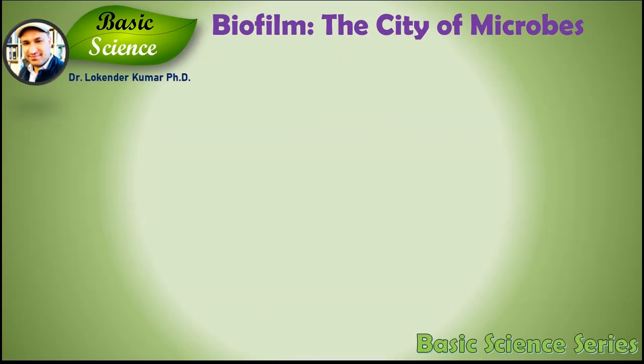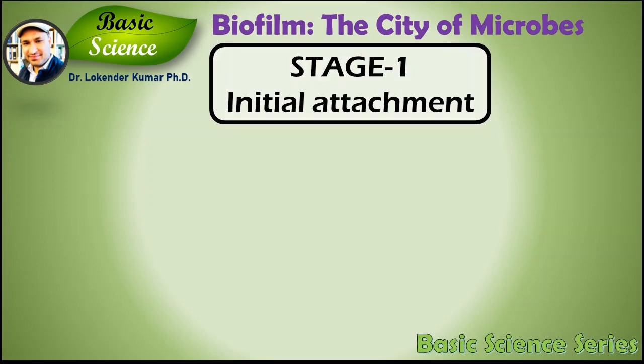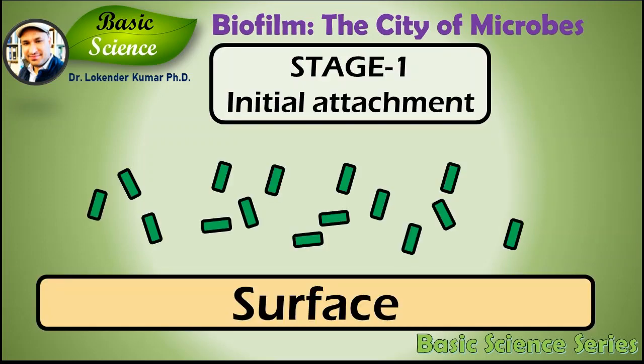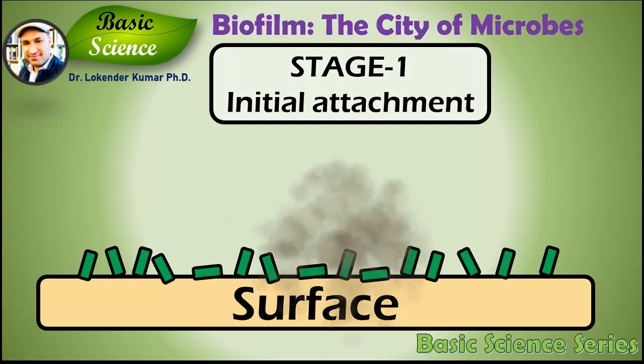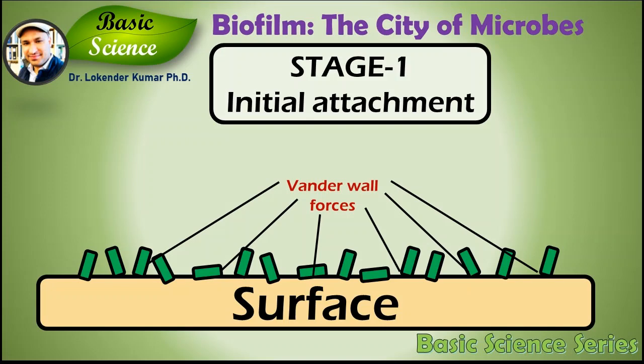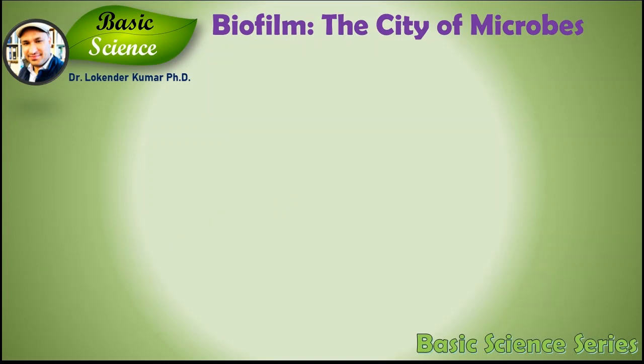Let's start with Stage 1, which is initial attachment. This stage begins with the attachment of free-floating cells to a solid surface. At first, cells might attach to the surface by weak Van der Waal forces. These are physical forces present between molecules and atoms, with no chemical interaction involved. Using these forces, bacteria make their initial attachments to a solid surface.